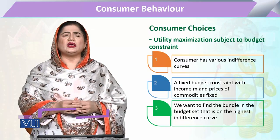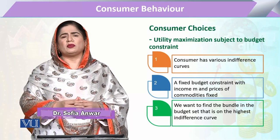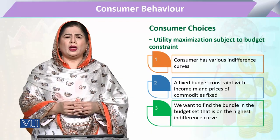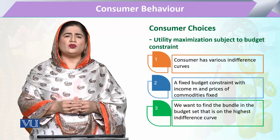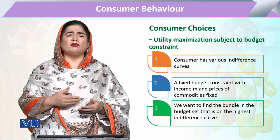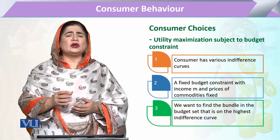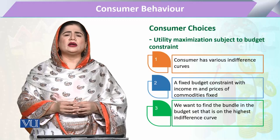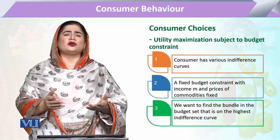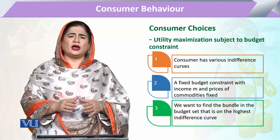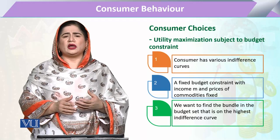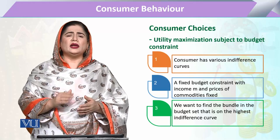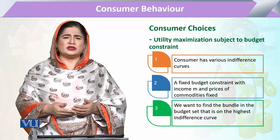The consumer has various preferences available to him, and at the same time has a very long list of wishes to attain various commodities. As per the law of monotonicity, the consumer is always willing to have more and more. In real life, this is not possible because consumers have many wishes but there are limited resources, and these limited resources provide a limit to their utility preferences.